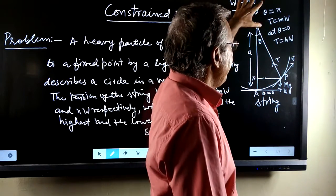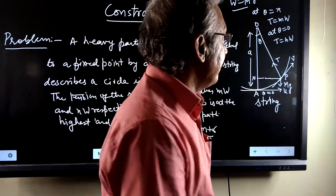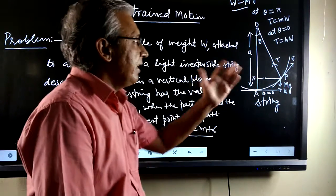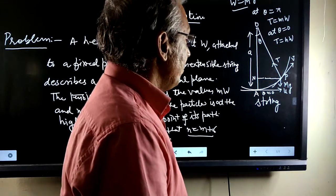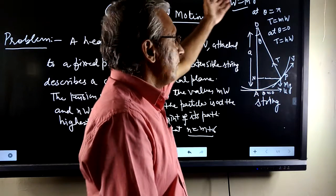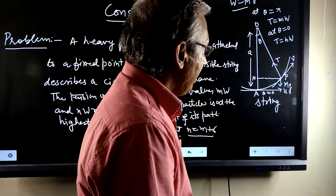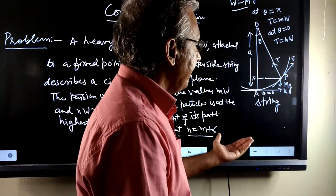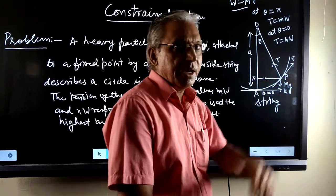At theta equal to pi, here we know that the string has a tension, that is T equal to mw at theta equal to pi. Here we know that w equal to Mg.